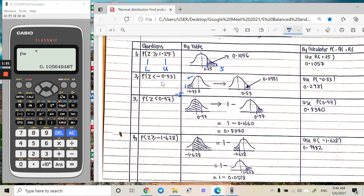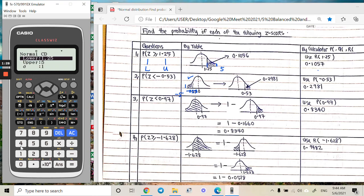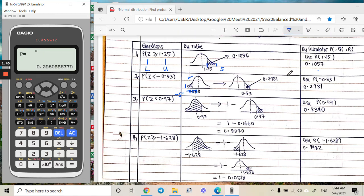Try to key in like just now. Lower will become negative 5, and then upper I put negative 0.53. I will get the answer 0.2981 approximately.